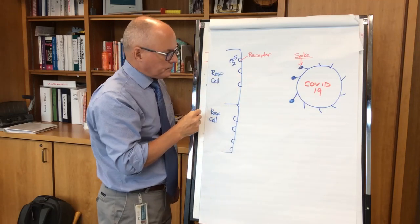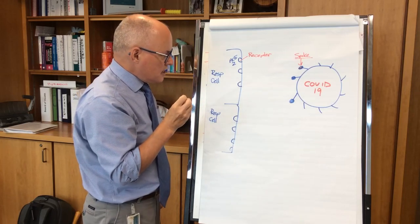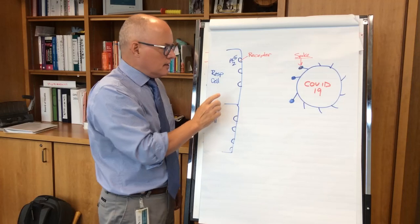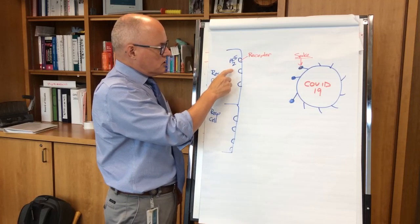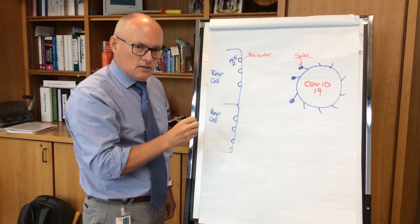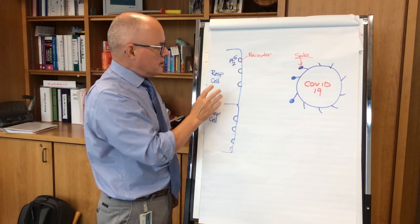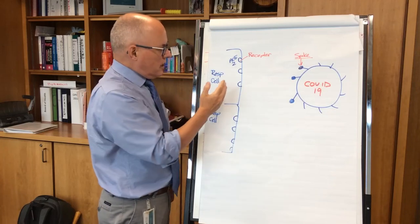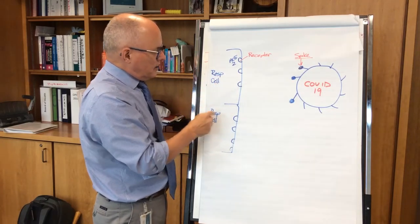It is now known that children over 10 have ACE2 receptors in a very similar density to adults, so children over 10 can get full symptoms just like adults. Whereas children under 10 have less ACE2 receptors.